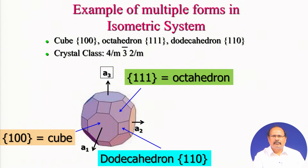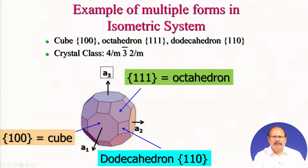In summary, isometric crystal forms include: 1 0 0 (cube), 1 1 0 (dodecahedron), hk0 (pyritohedron or tetra hexahedron), 1 1 1 (octahedron or tetrahedron), hhl forms (tristetrahedron, trapezohedron, deltoid dodecahedron, trisoctahedron), and hkl forms (five varieties). Isometric crystals can display combinations of forms; for example, cubic faces (6), dodecahedral faces (12), and octahedral faces (8) can all be present simultaneously in one crystal.